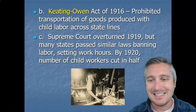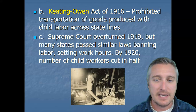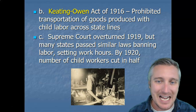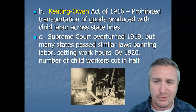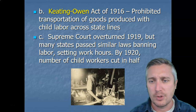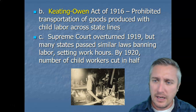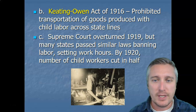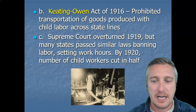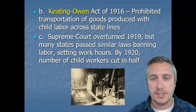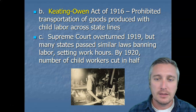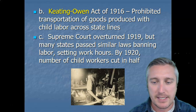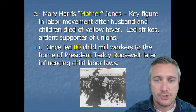Ultimately, that law got overturned in 1919 because it violated some constitutional provisions denying the federal government's ability to intercede in interstate commerce. That was probably the correct legal response, but it did go a long way in starting that conversation. By 1920, the number of child workers in this country had been cut in half. That started to gain momentum, and a lot of states began passing laws on their own before the federal government even got started.